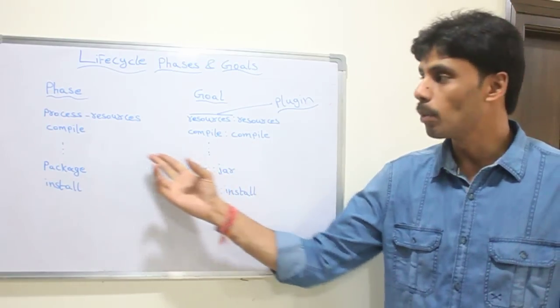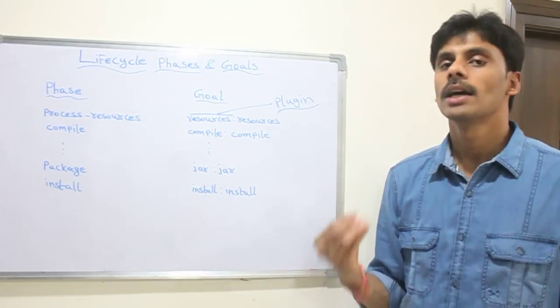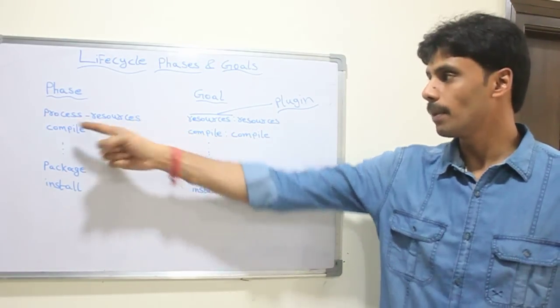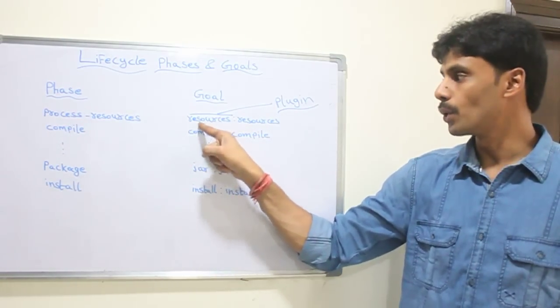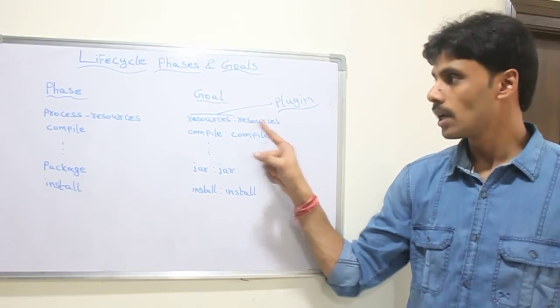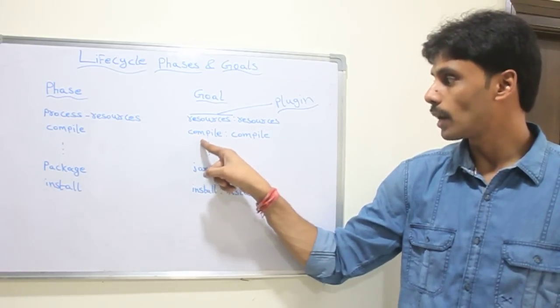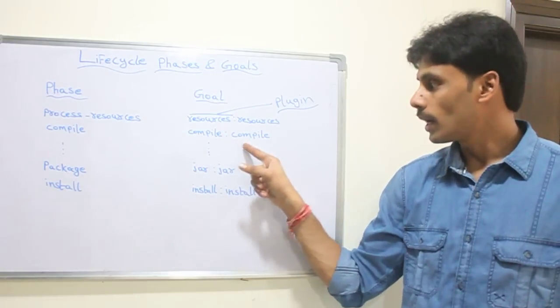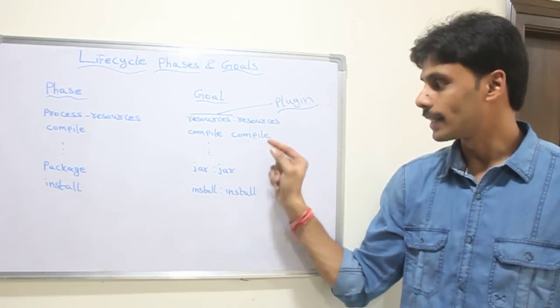Multiple goals can be bound to a single lifecycle phase but we usually see that there are single goals which is bound to a lifecycle phase. For example process resources is bound to resources colon resources. Compile phase is bounded to compile colon compile. Wherein compile is the plugin then colon compile this is the actual goal or the task.